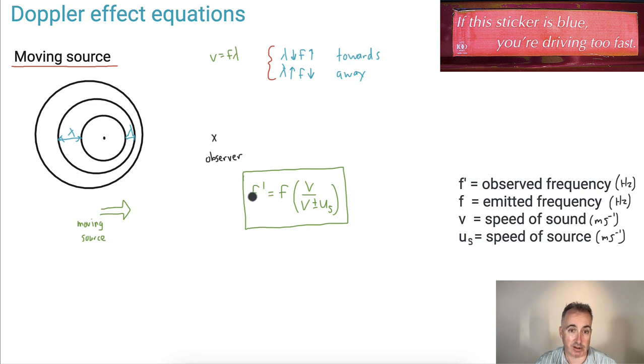like if I want this to be bigger than this, then what do I want to do? I want to divide by a smaller number, for example. If I want this here to be a smaller number, then I want to divide by a bigger number. So I'll do a V plus U_S. So we'll see how that works.